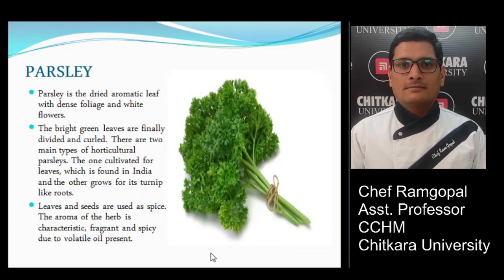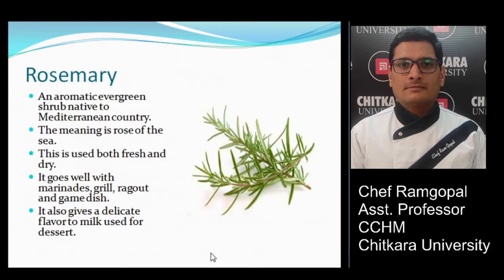Parsley is commonly used for garnishing or can be chopped and used in any preparation. It can also be dried — the dried aromatic leaf with dense foliage and white flowers gives a distinctive flavor. The bright green leaves are finely divided and curled. There are two main types: one cultivated for leaves, found in India, and another grown for its turnip-like roots. Leaves and seeds are used as a spice, with a characteristic fragrant and spicy aroma due to volatile oil.